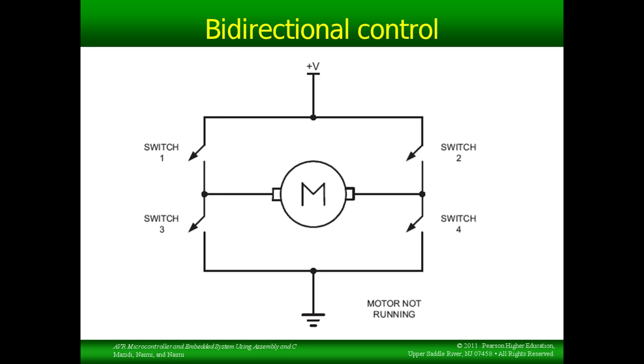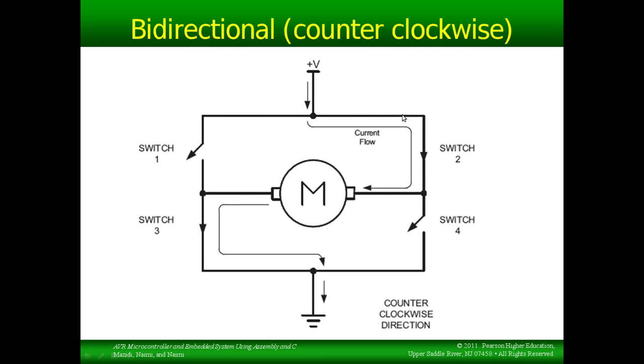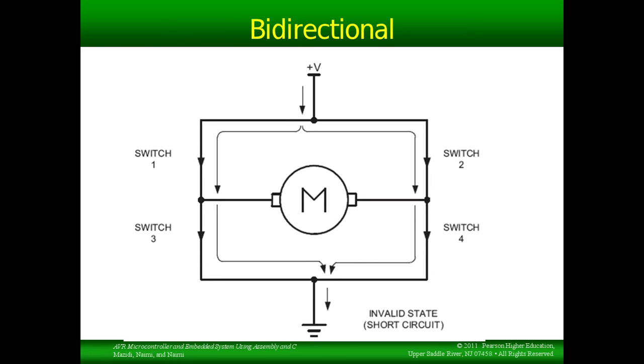So conceptually, we can get bidirectional control by switching. If we have two of the switches closed, one and four, then we'll get current that makes the motor turn clockwise. If we open those switches and close the other two, then current is going the opposite direction, and the motor turns in the opposite direction. So this is a representation of how an H-bridge works. The state where all the switches are closed is invalid, because it would just bypass the motor with a short circuit.